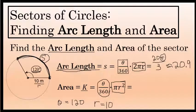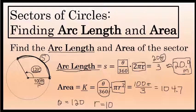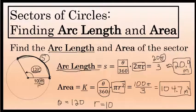The area will be 120 over 360 times pi times 10 squared, which is exactly 100 pi over 3. Areas of circles and sectors are usually irrational numbers — they'll be in terms of pi if you want to represent them exactly. Approximated to the nearest tenth, this is 104.7. If our units are meters, the area is approximately 104.7 meters squared. Arc length is a distance, so the arc length is approximately 20.9 meters, while area is measured in square units.